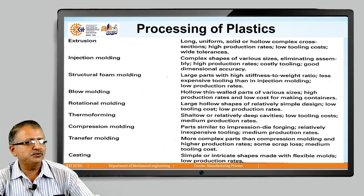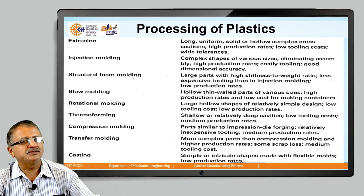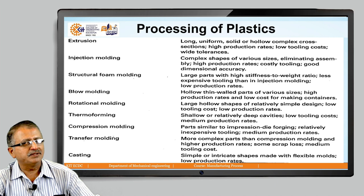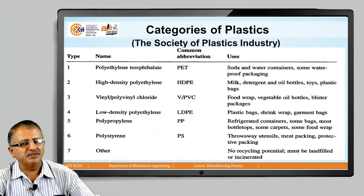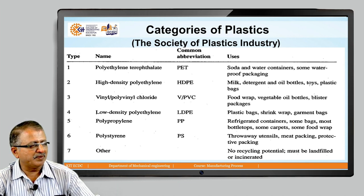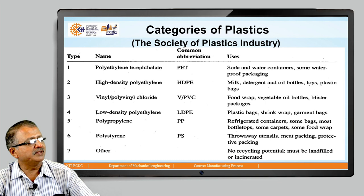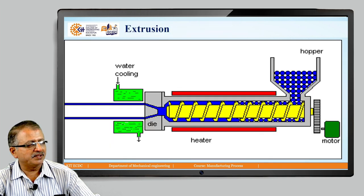Extrusion process is used for long, uniform, solid or hollow complex cross sections. Its characteristic features include high production rates, low tooling cost, and it fulfills tolerance requirements — meaning quality is attainable as per requirement. Various categories of plastics are specified by the Society of Plastics Industry and are utilized for particular product manufacturing.